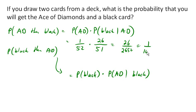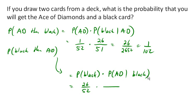The probability of getting a black card on the first draw is 26 out of 52. The probability of getting an ace of diamonds given that the first card was black — if the first card was black, there's one less card in the deck, but we know the ace of diamonds is still there, so there's still one of them. So we end up with 26 out of 2652, which is 1 out of 102.